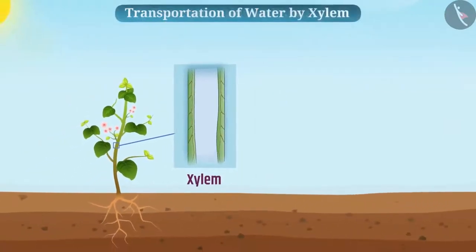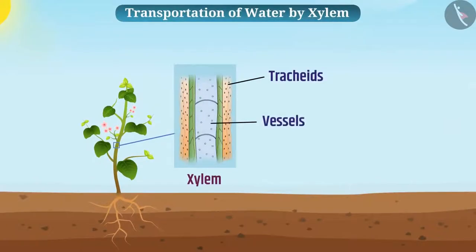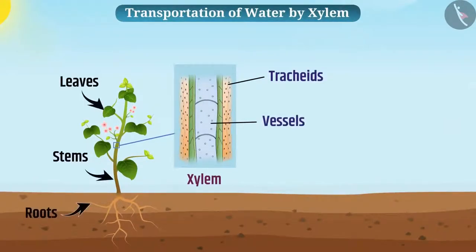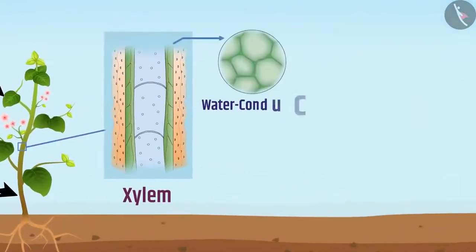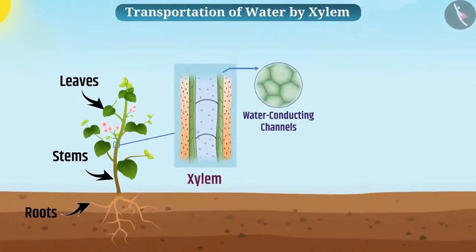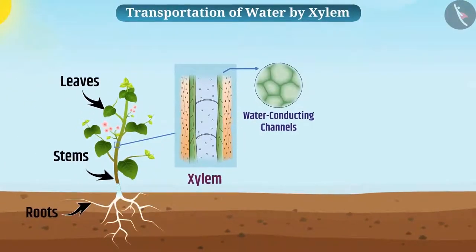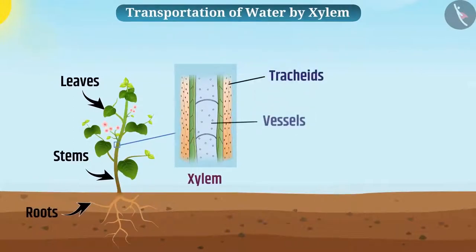Let us now see how water is carried by xylem. Tracheids and vessels of roots, stems and leaves form a continuous network of water-conducting channels in the xylem tissue. This network is connected to all parts of the plant. Therefore, there are tracheids and vessels in the xylem which transport water and minerals in the form of ions.